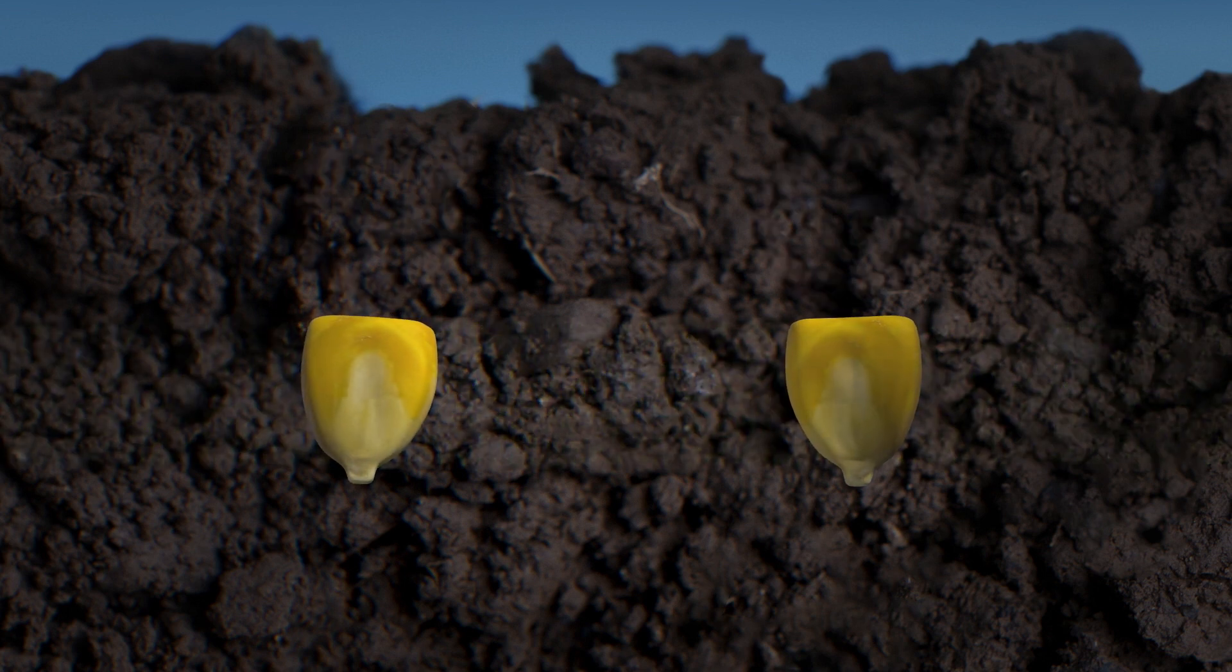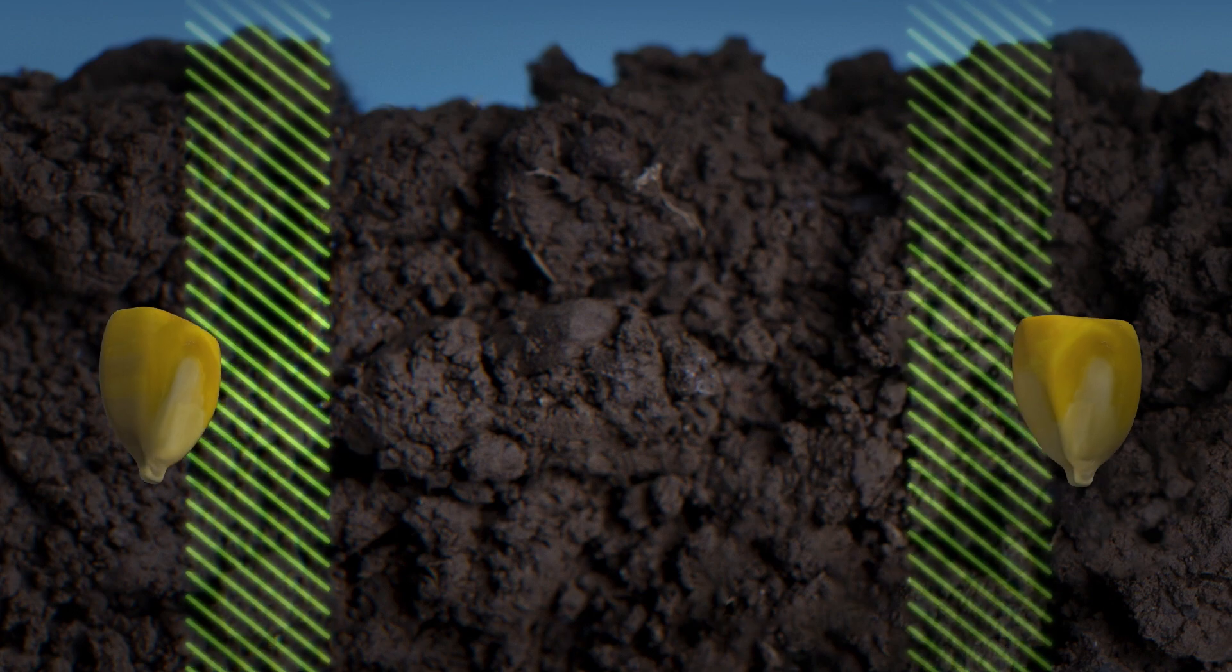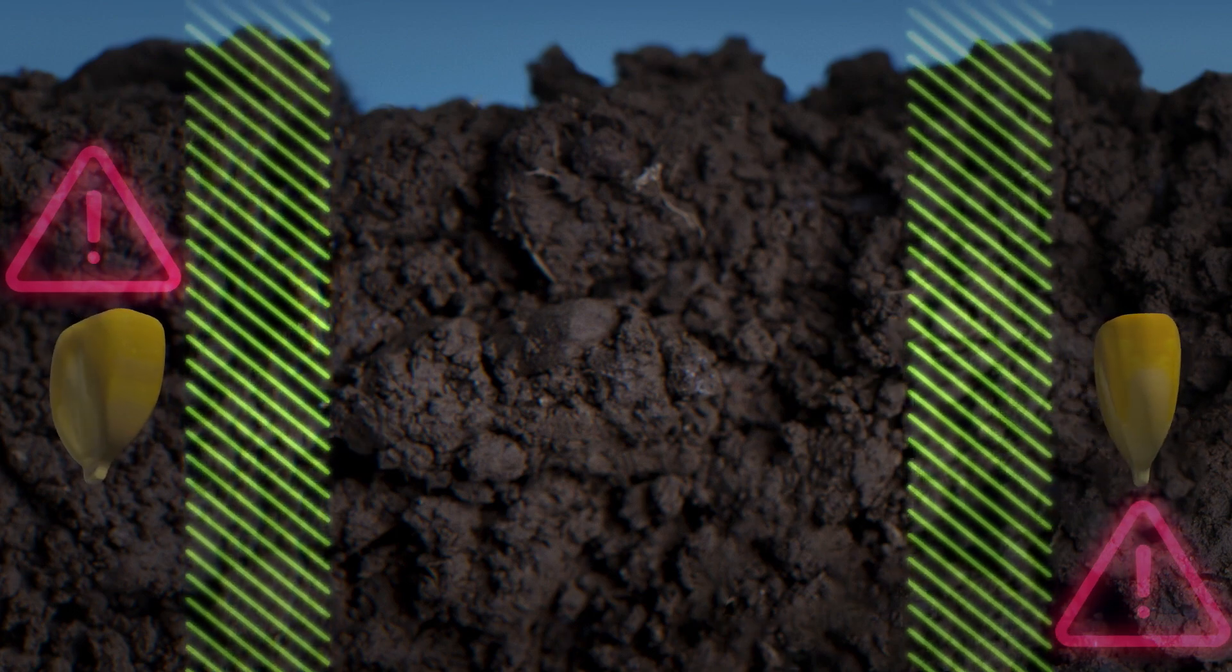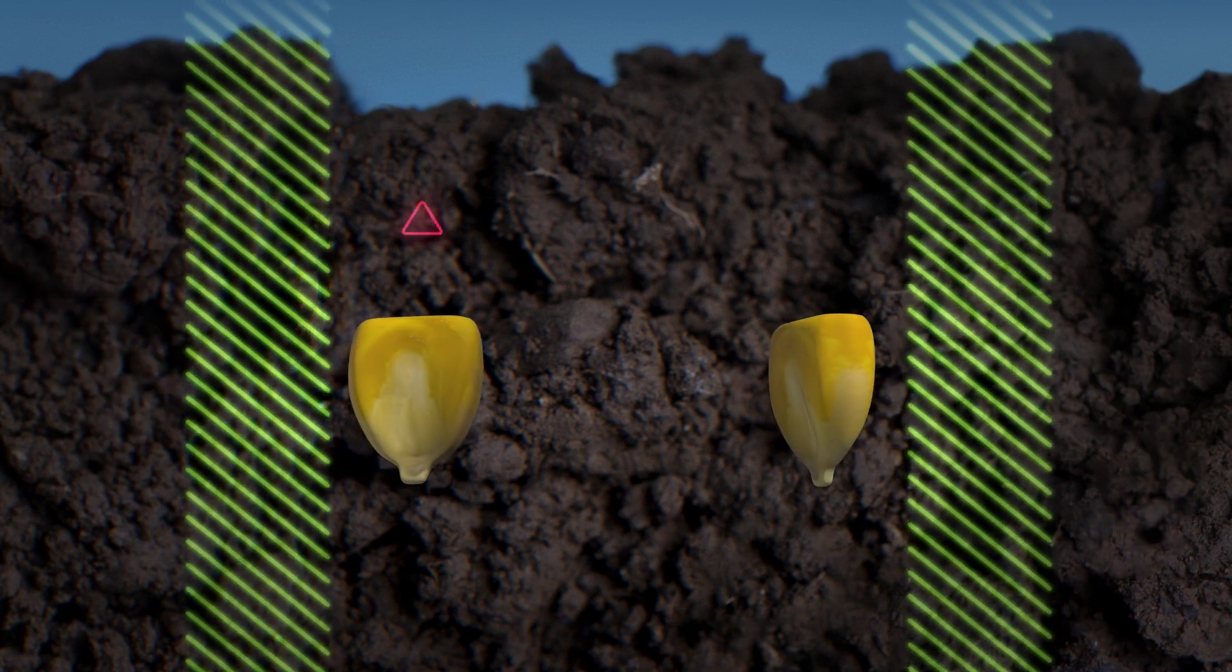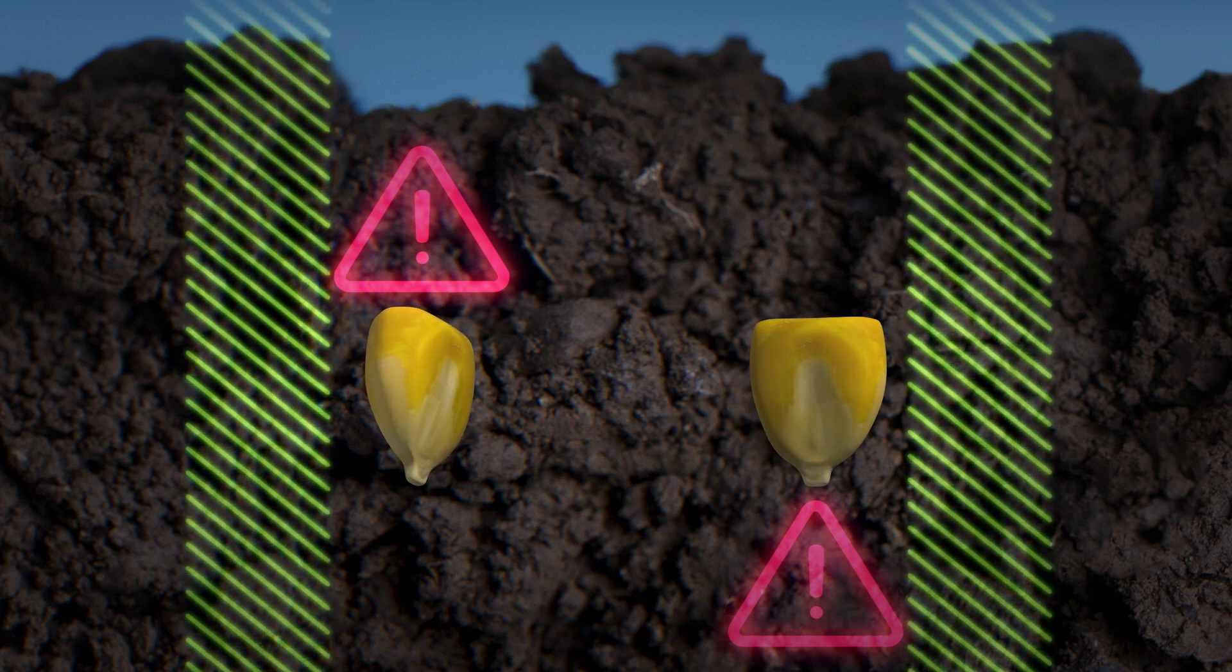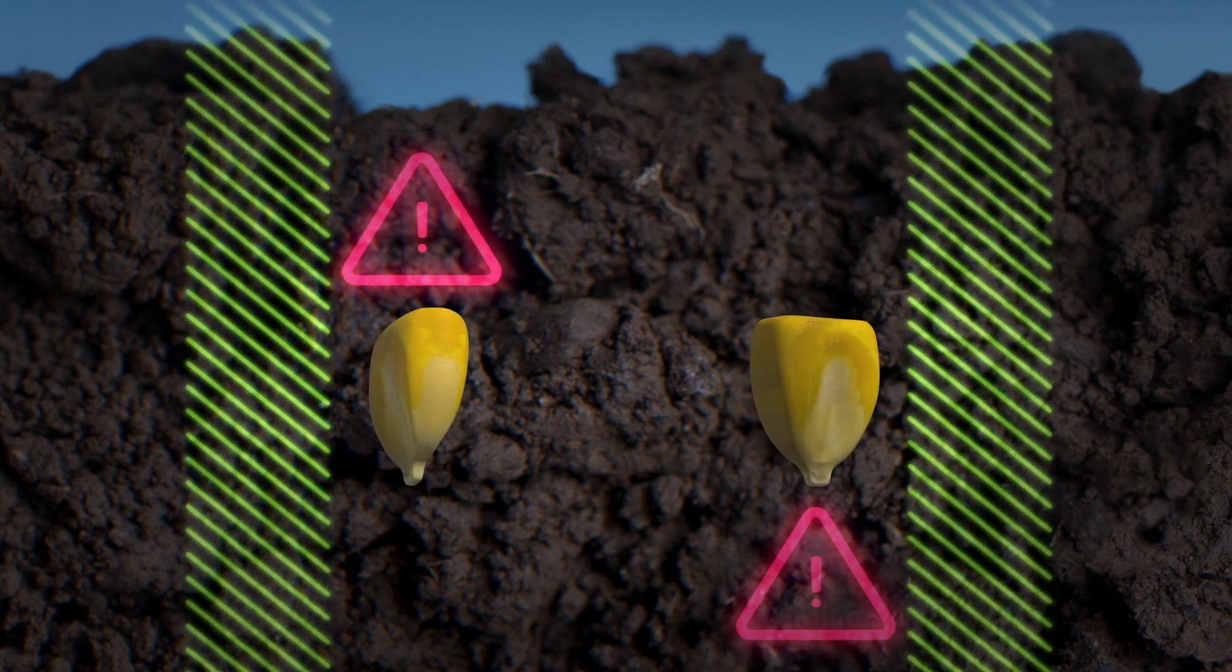The distance between each seed is equally important. Seeds planted too far apart will unnecessarily take up valuable space in the field, while seeds too close together will be fighting for the same sunlight, as well as the necessary nutrients such as fertilizer that they depend on.